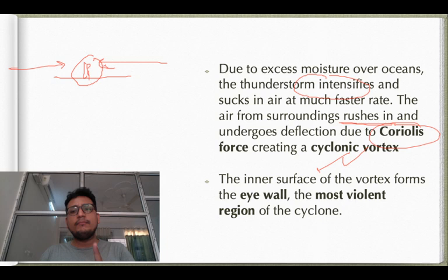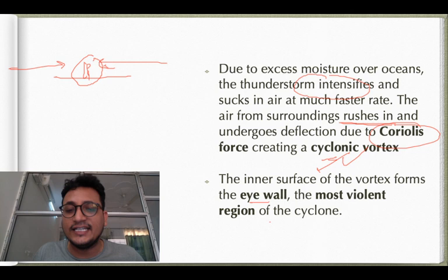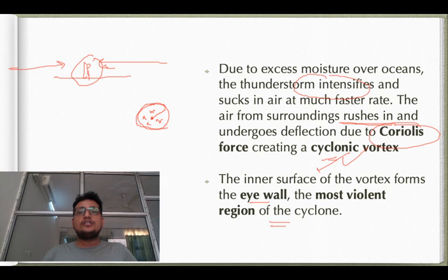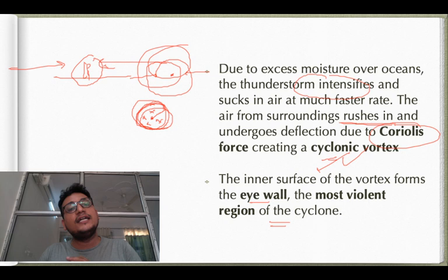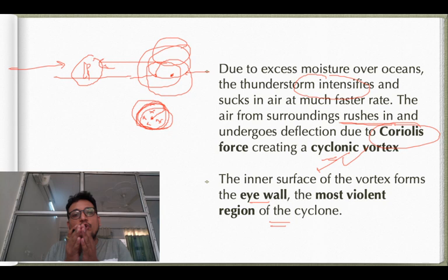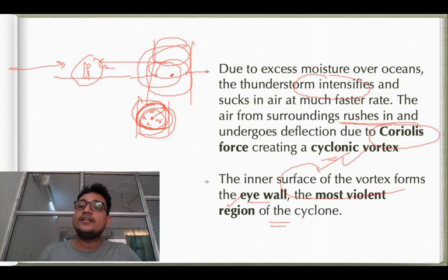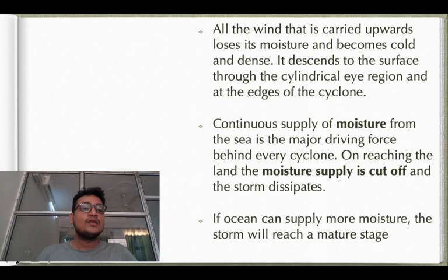The inner surface of the vortex forms the eye wall — the most violent region of the cyclone. The low pressure center is the eye region — calm, with no wind reaching it because Coriolis force deflects the winds before they can reach the center. All the violent activity happens at the circumference — the eye wall. The center (eye) region is empty of winds; winds rotate very fast around it at the eye wall.